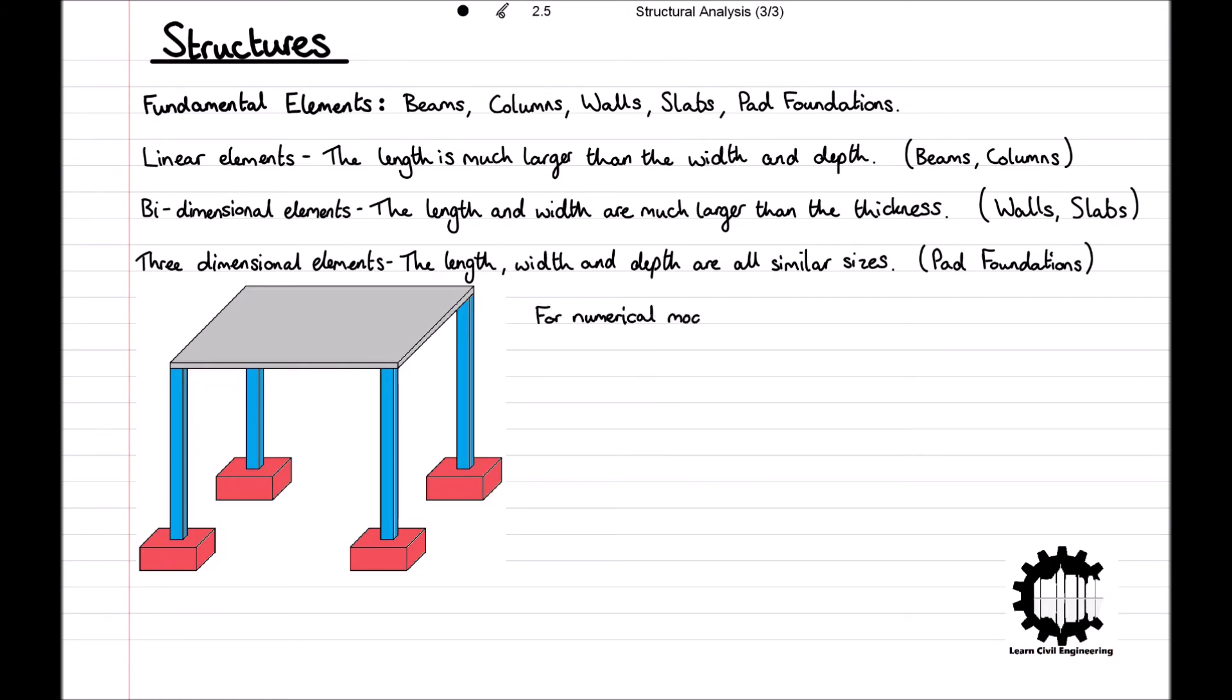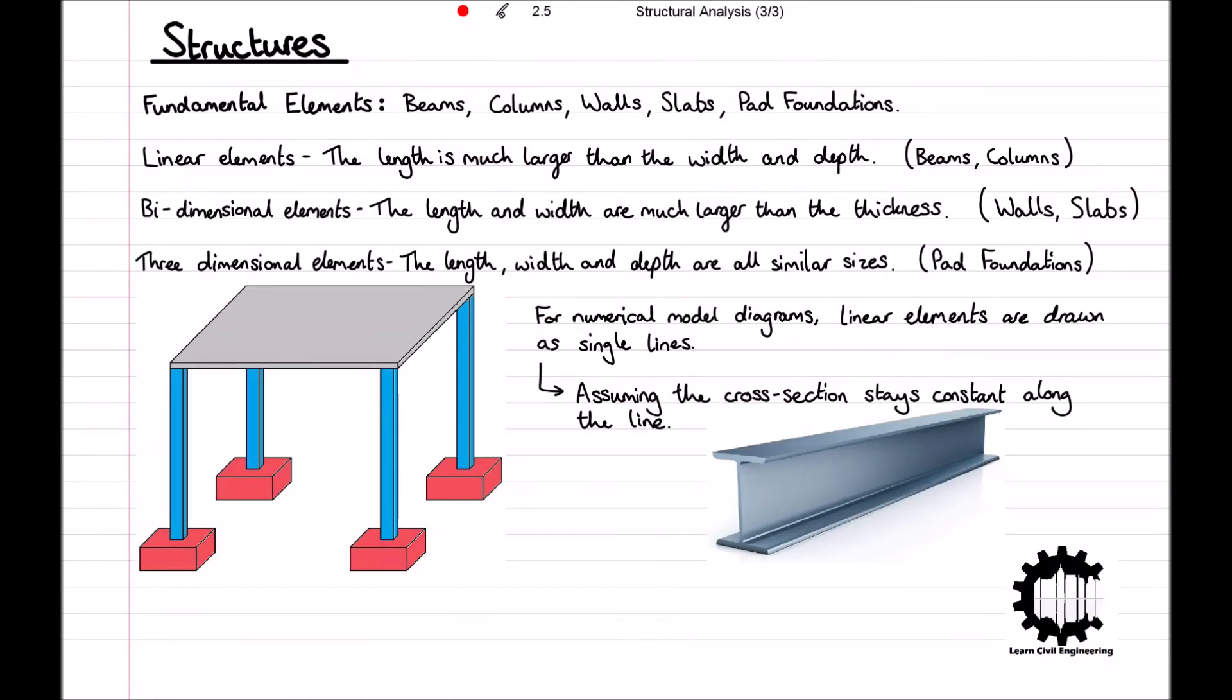In diagrams used for the numerical modeling of structures, linear elements like beams and columns are typically modeled as a line, as it's more convenient than drawing the true shape of the element. When using a line to illustrate a linear element, each point in the line has the properties of the cross section. So for example, let's say we have this steel I-beam. Taking the plane perpendicular to the axial direction gives us the following cross section. So when drawing this beam in a structure as a line, we know that the line has this cross section at any point along it.